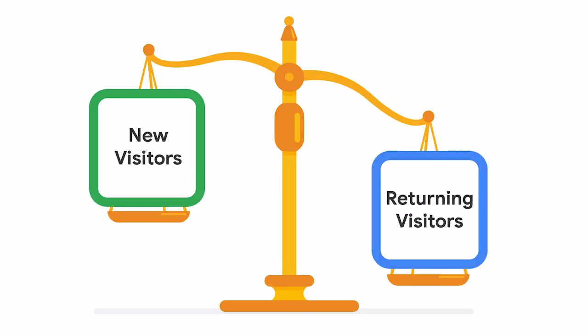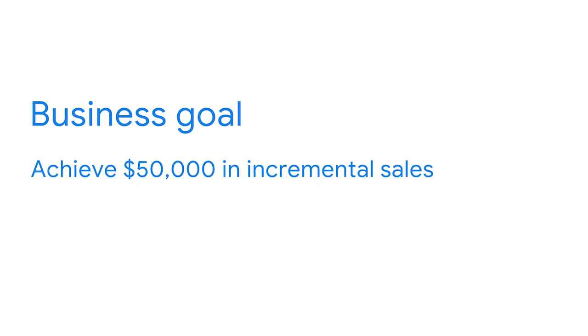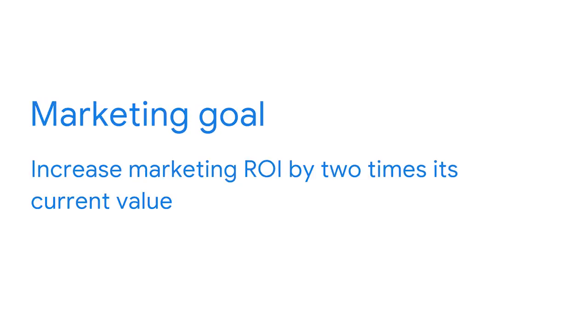In the second example, a business goal is set to achieve $50,000 in incremental sales over the next month. A marketing goal follows to increase the marketing return on investment, or ROI, by two times its current value. To determine a performance goal and additional budget at a campaign level, perform a couple of calculations.